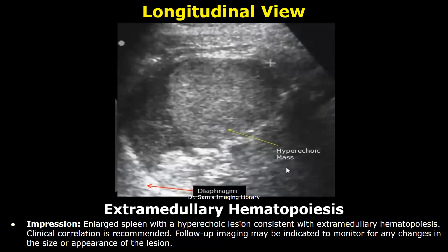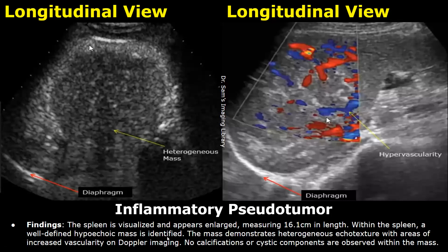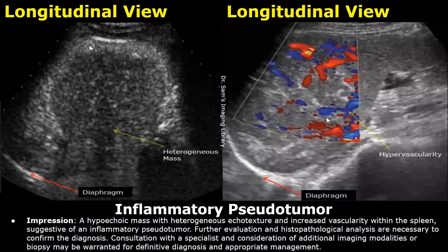The findings for an inflammatory pseudotumor include an enlarged spleen, and in this example a well-defined hypoechoic mass is identified. It is heterogeneous in echo texture with areas of increased vascularity on Doppler imaging. These findings are written in the impression and further evaluation, including histopathological analysis and additional imaging modalities or biopsy, are advised.